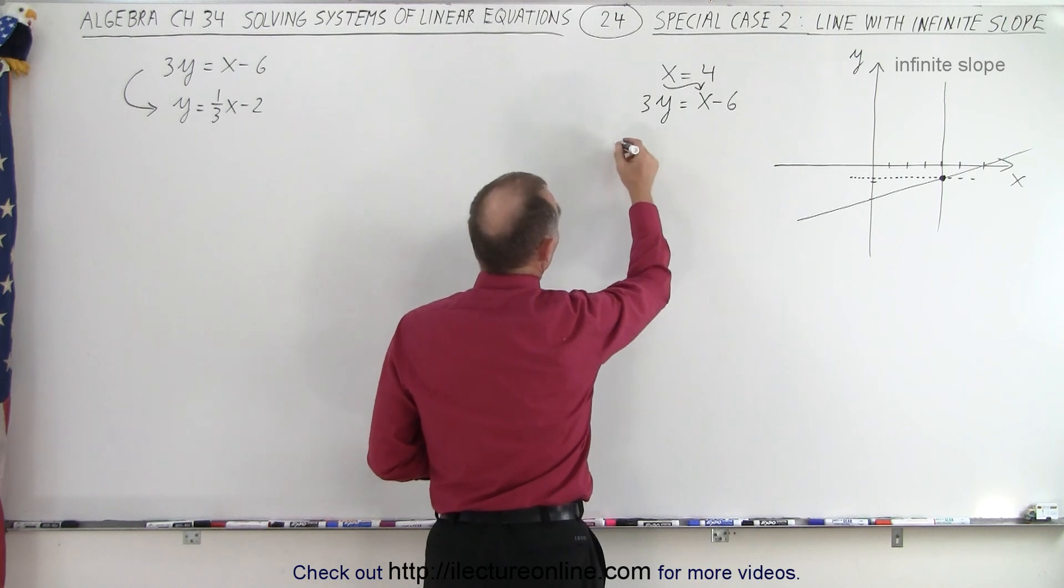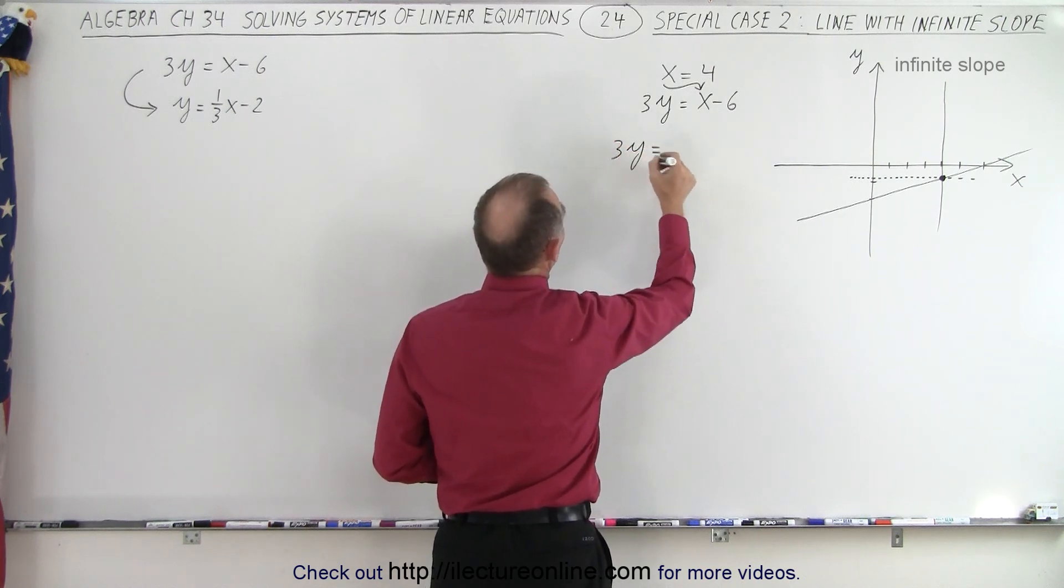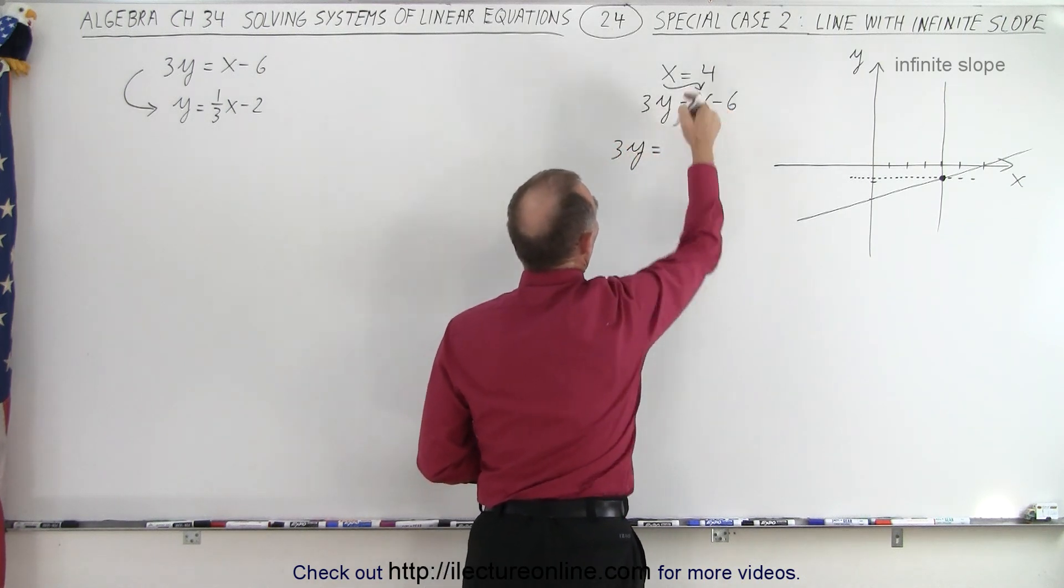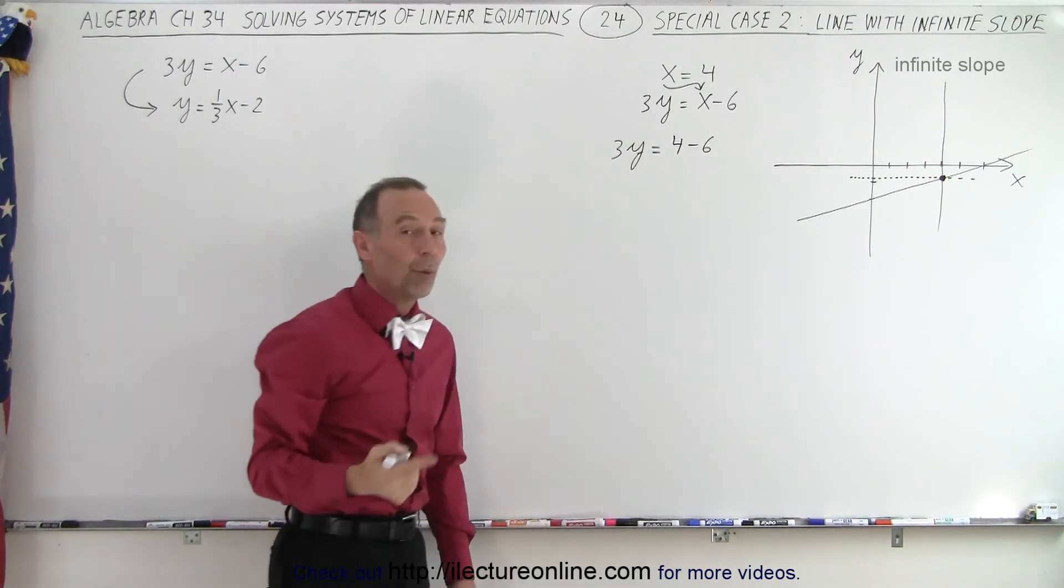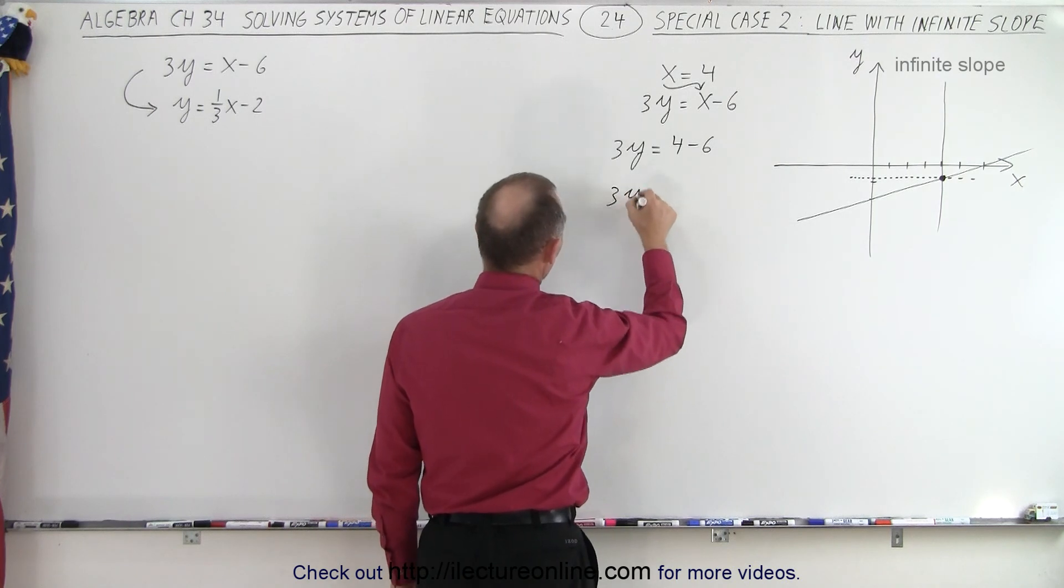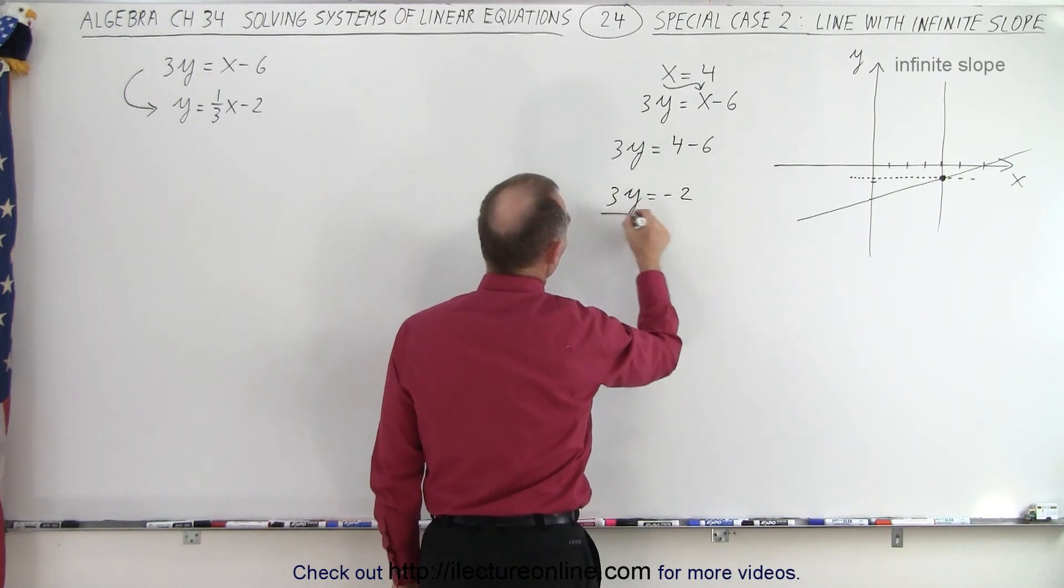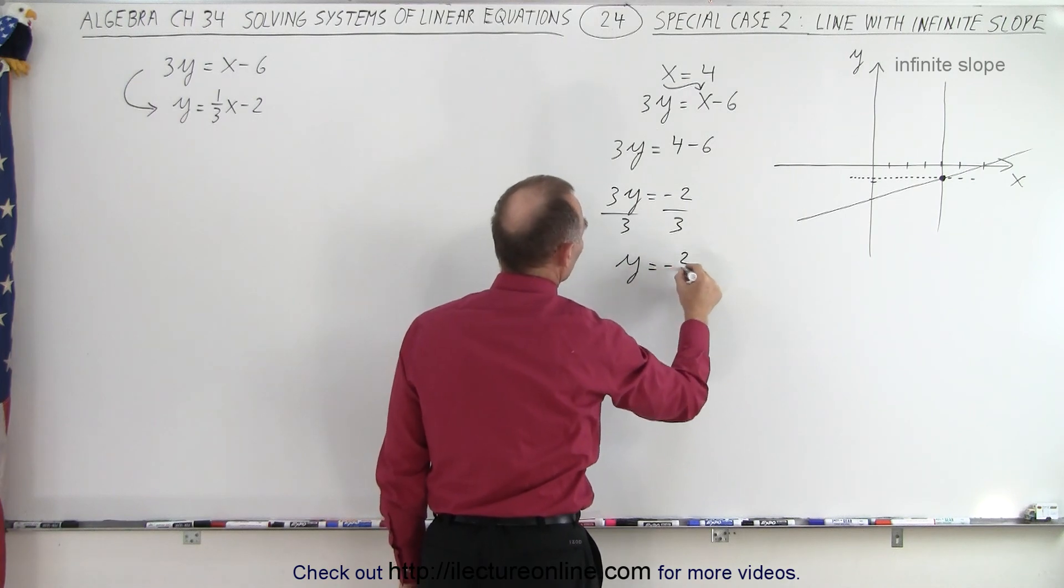So that means that we take 3y is equal to, instead of x we replace it with the number 4, 4 minus 6, and we then solve this for y. So now we get 3y is equal to negative 2, divide both sides by 3, and we get y equals negative 2/3.